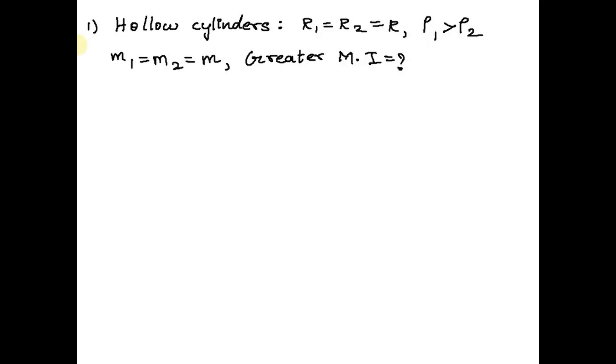Hi, this question is based on moment of inertia. Two hollow cylinders having the same mass — M1 and M2 can be taken as a commonly small M.